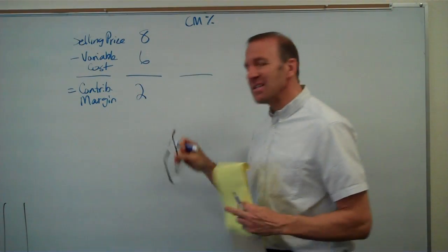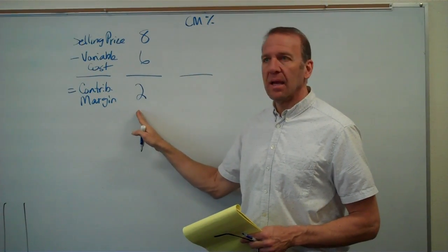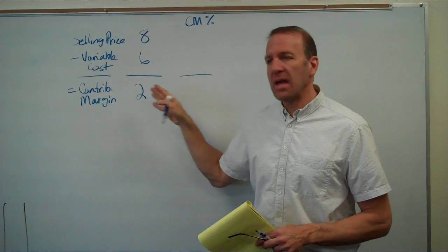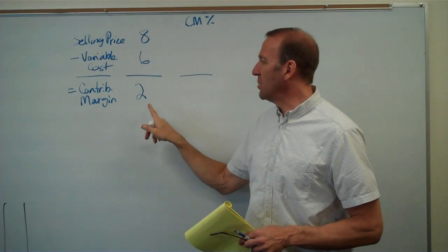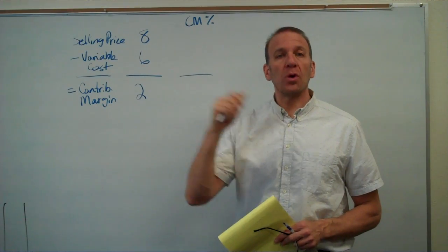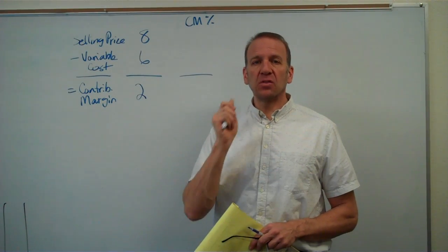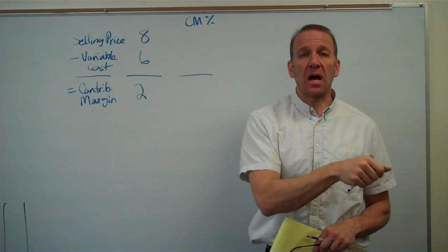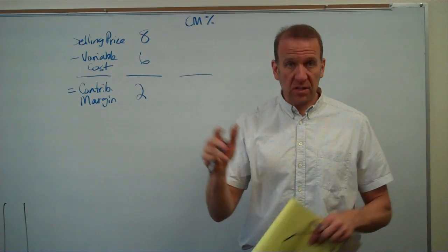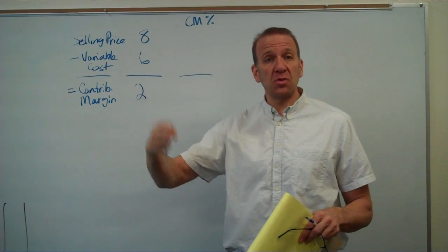Every time we sell a unit — let's say this is a basketball — we have $2 left over to go towards our fixed costs. Every time we sell a basketball, $2 goes to pay off our fixed costs. And once we've paid off all of our fixed costs, that's our break-even point — then every basketball sold is $2 profit.